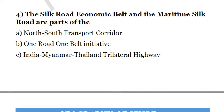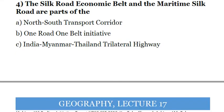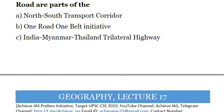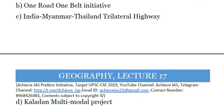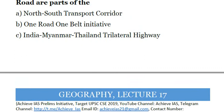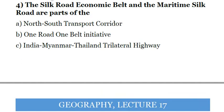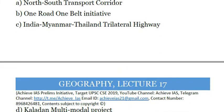The fourth question: the Silk Road Economic Belt and the Maritime Silk Road are parts of — A. North-South Transport Corridor. B. One Belt One Road Initiative. C. India-Myanmar-Thailand Trilateral Highway. D. Kaladan Multi-Modal Project. The Silk Road Economic Belt and Maritime Silk Road are parts of the One Belt One Road Initiative that China is undertaking.